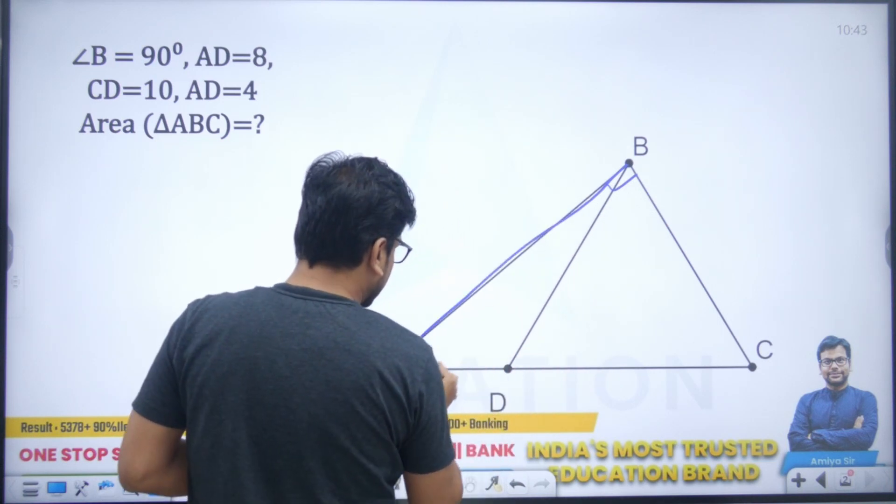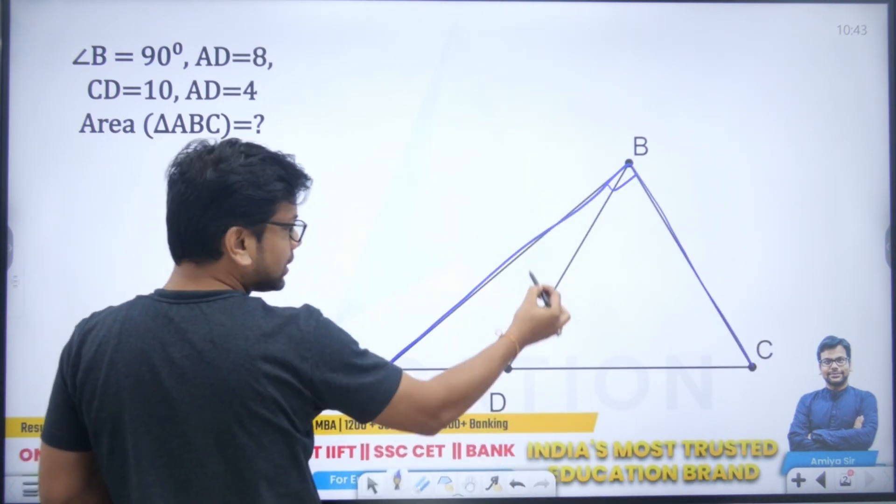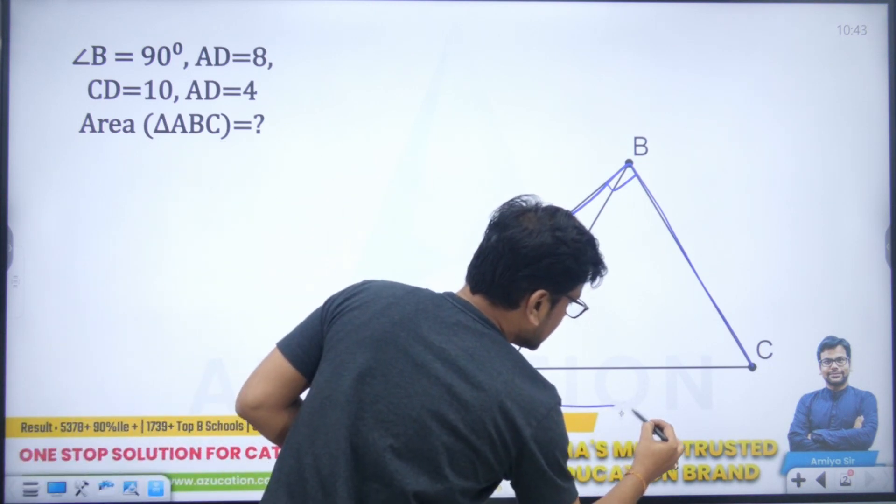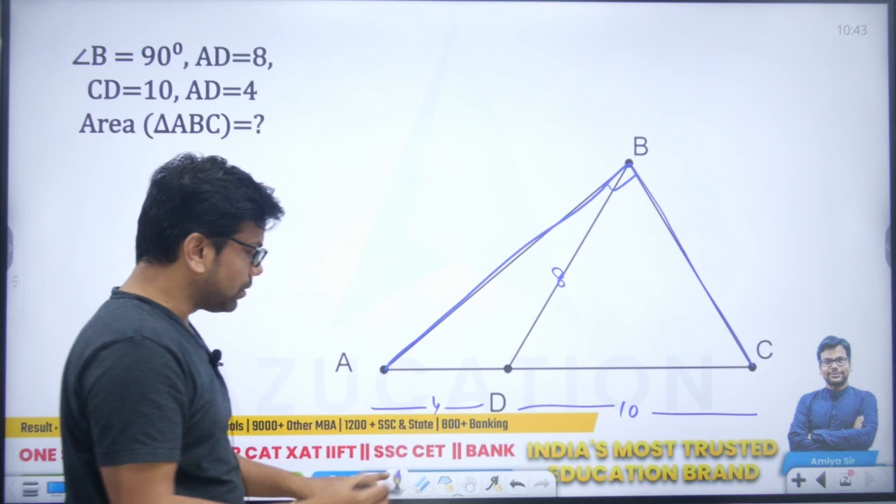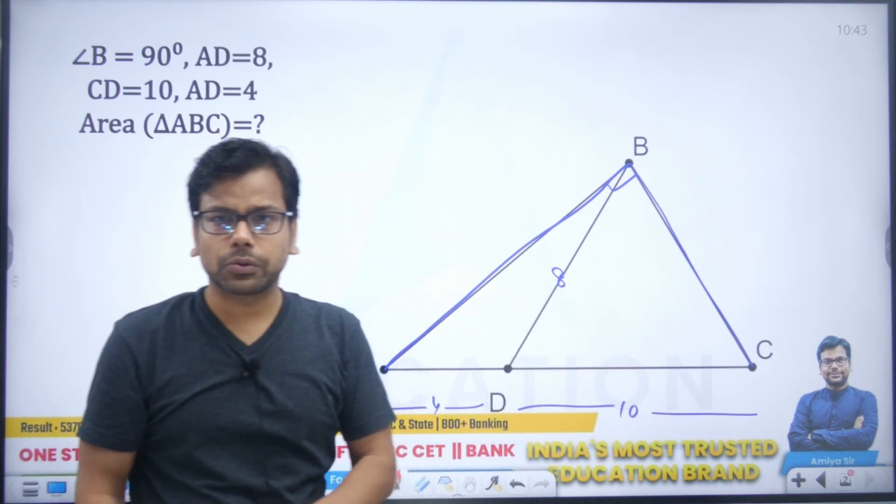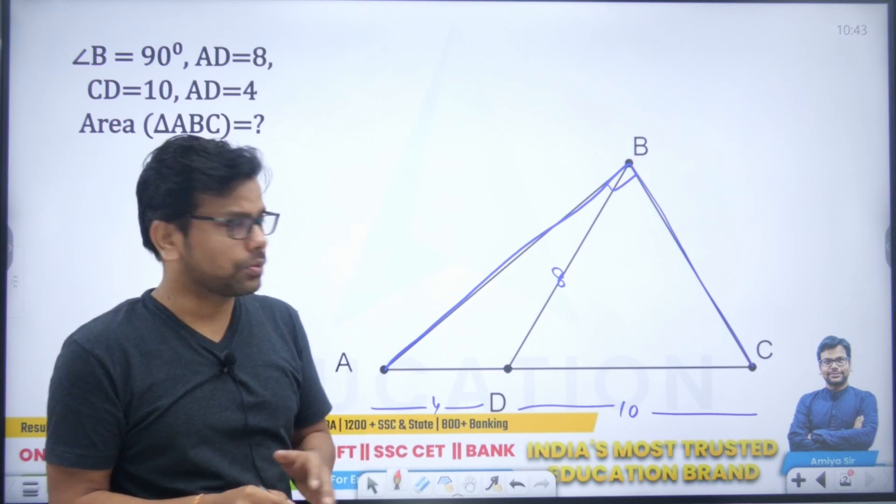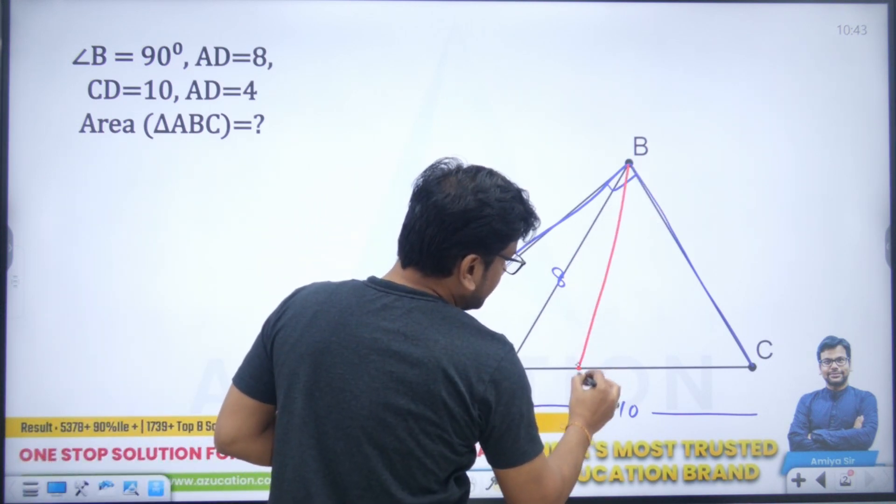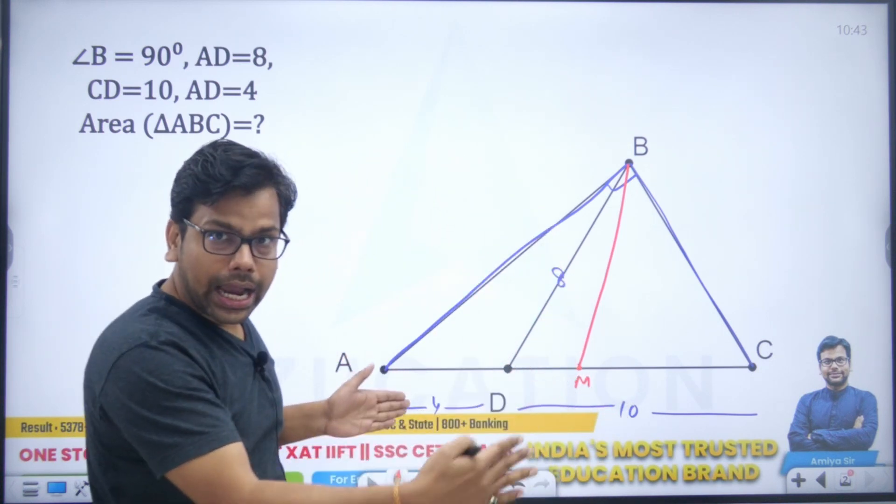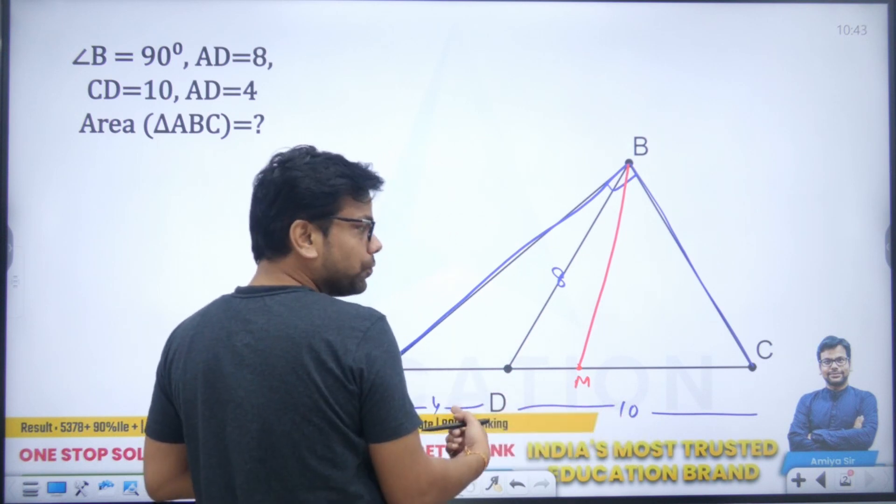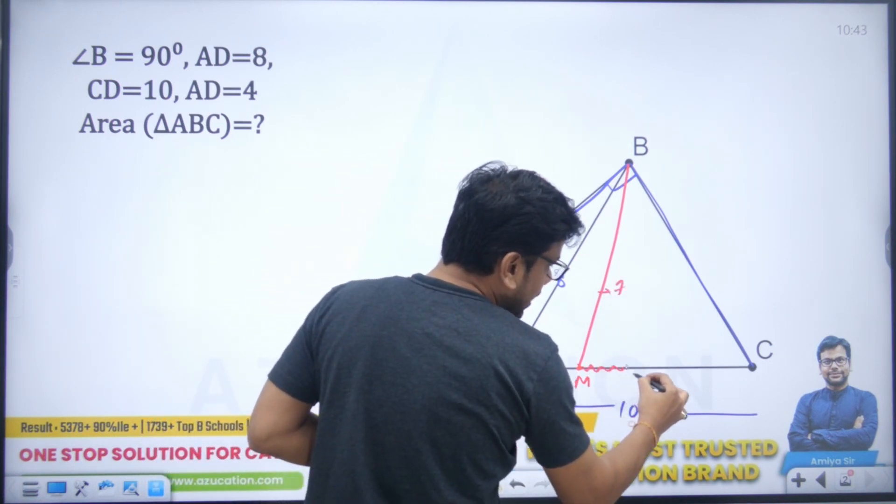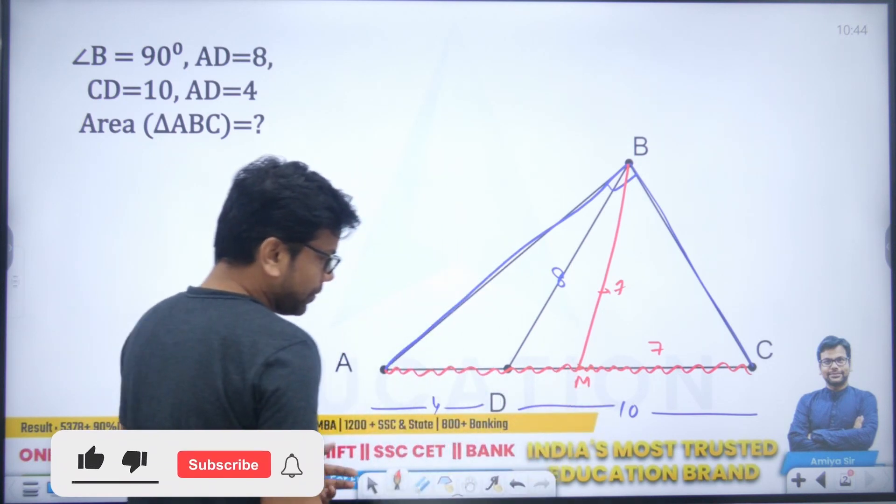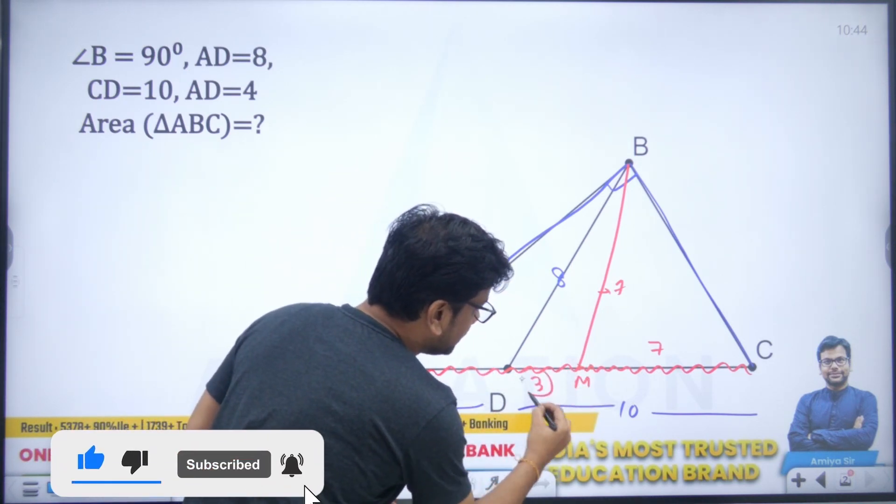Whenever you have a right-angled triangle, this one is your right-angled triangle, and the median is not given, but the cevian is given. BD is given 8, CD is 10, and AD is 4. If we want to find the area of triangle, we draw a median. Say BM is the median. It's a right-angled triangle, hypotenuse median is half. If the total length is 10 plus 4 is 14, this length should be 7. And the median divides hypotenuse in 2 equal halves. This length should be 7 and this entire length should be 7. AD is 4, so BM is equal to 3.